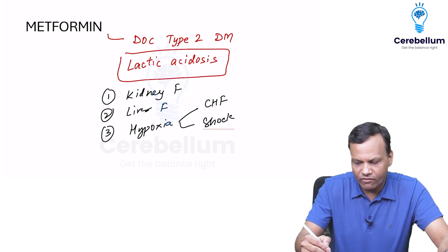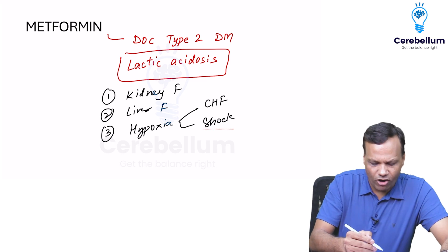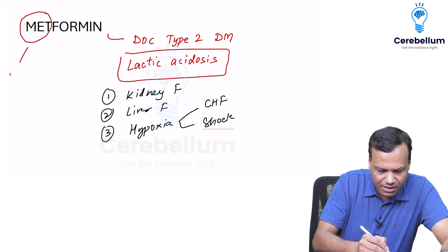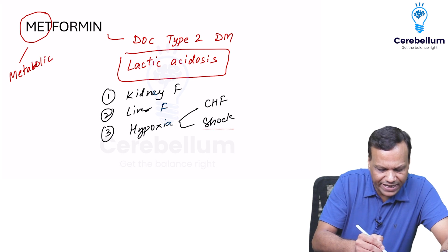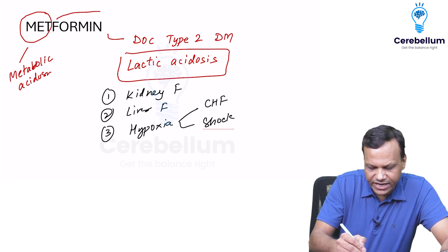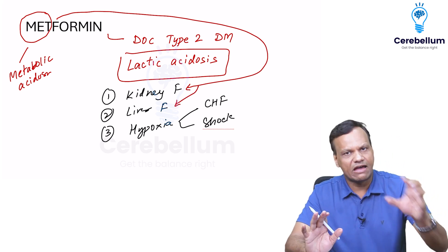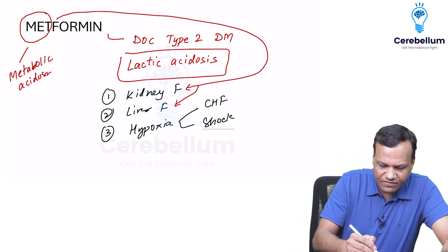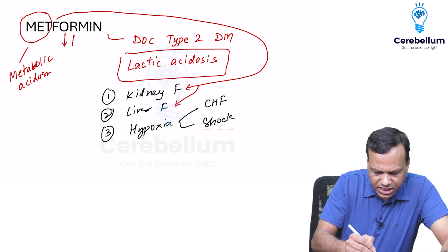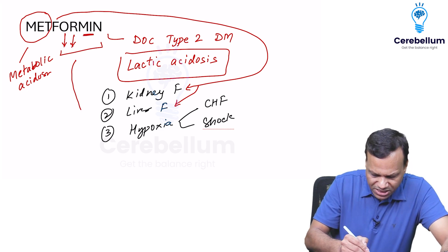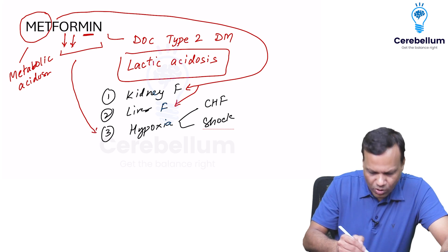So how to remember the contraindications? The mnemonic is 'metformin.' It says metformin will cause metabolic acidosis — that means lactic acidosis. In which patients? Number one: F means failure — liver failure or kidney failure. Second: if oxygen reaching the tissues is minimum, that means the patient is predisposed to hypoxia.